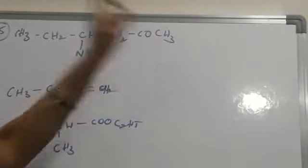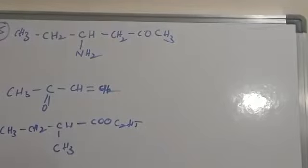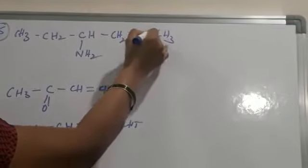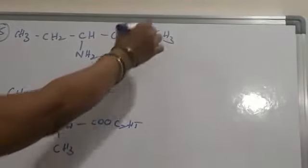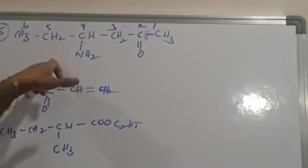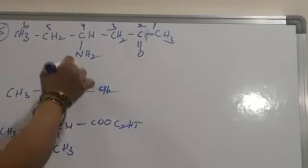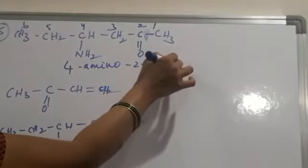Next: 1, 2, 3, 4, 5, 6 — 6 carbons. Main functional group is C=O, which is the ketone functional group, and amine becomes a substituent. Numbering starts from the ketone end: 1, 2, 3, 4, 5, 6. So the name is 4-amino-2-hexanone.